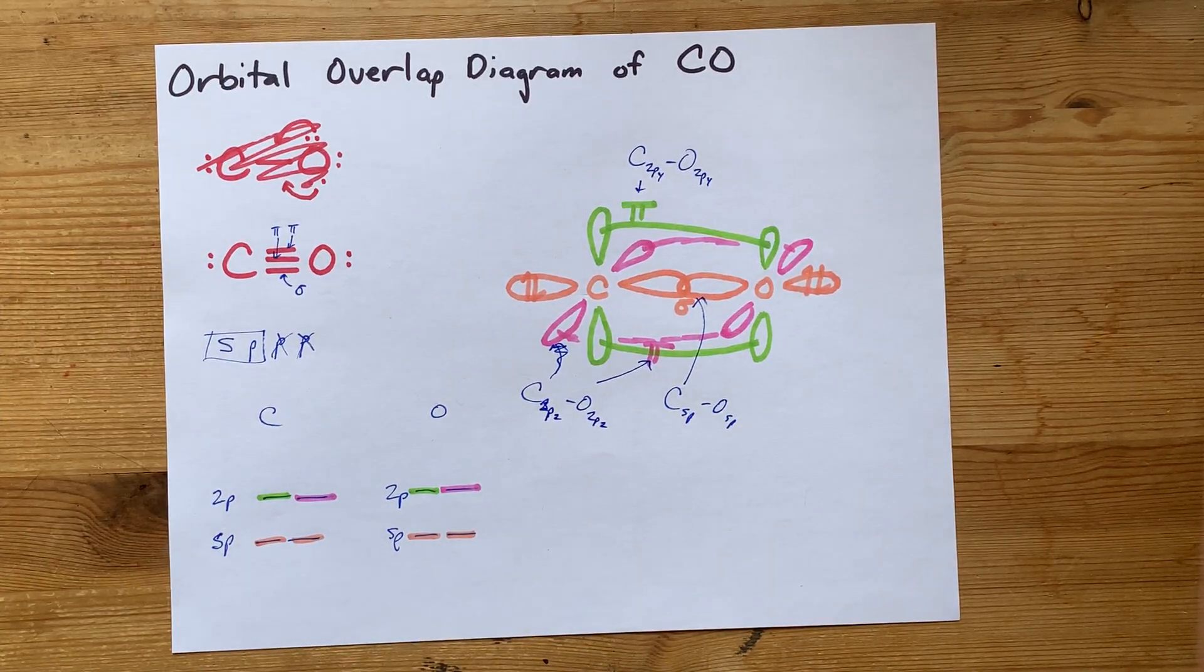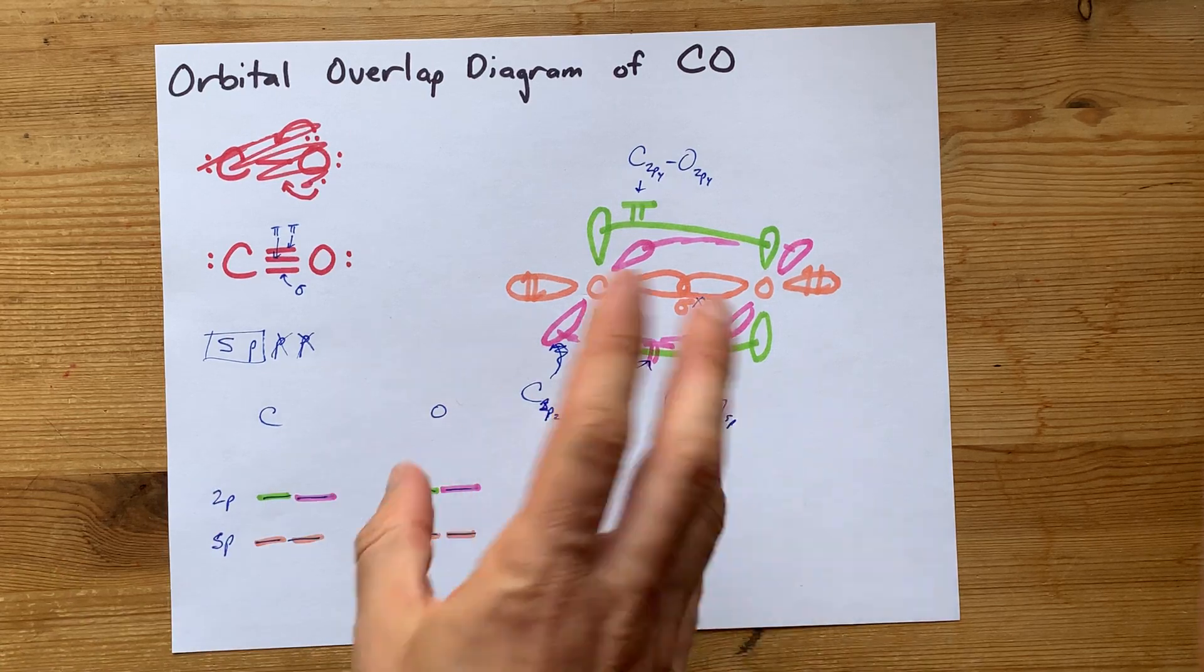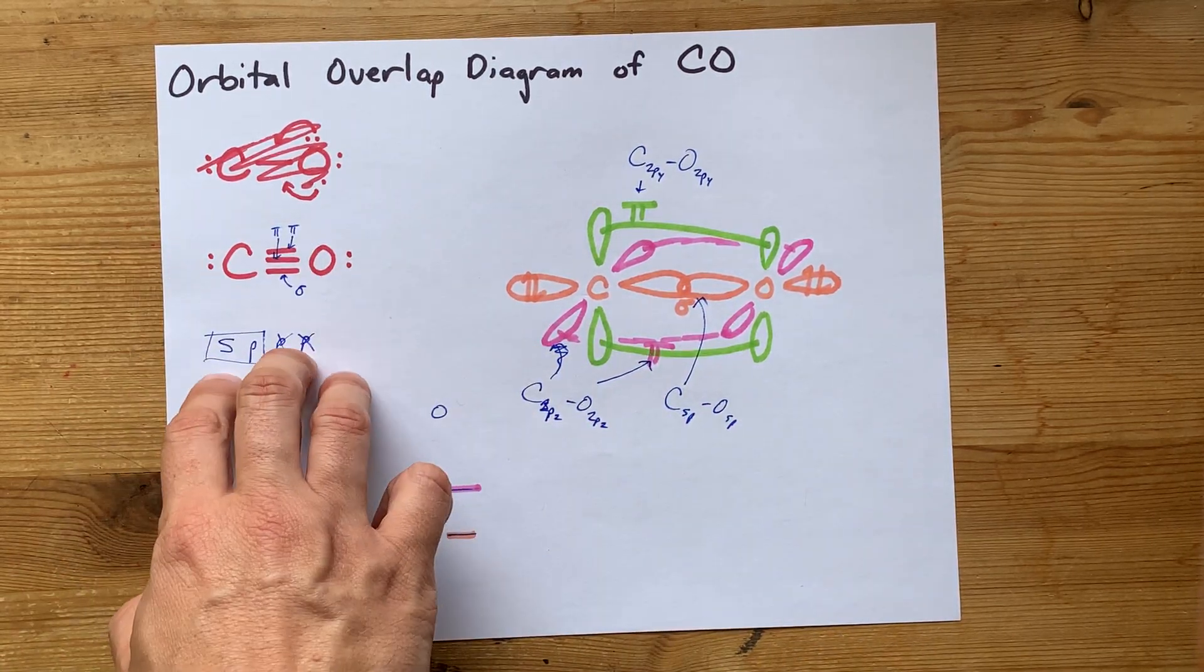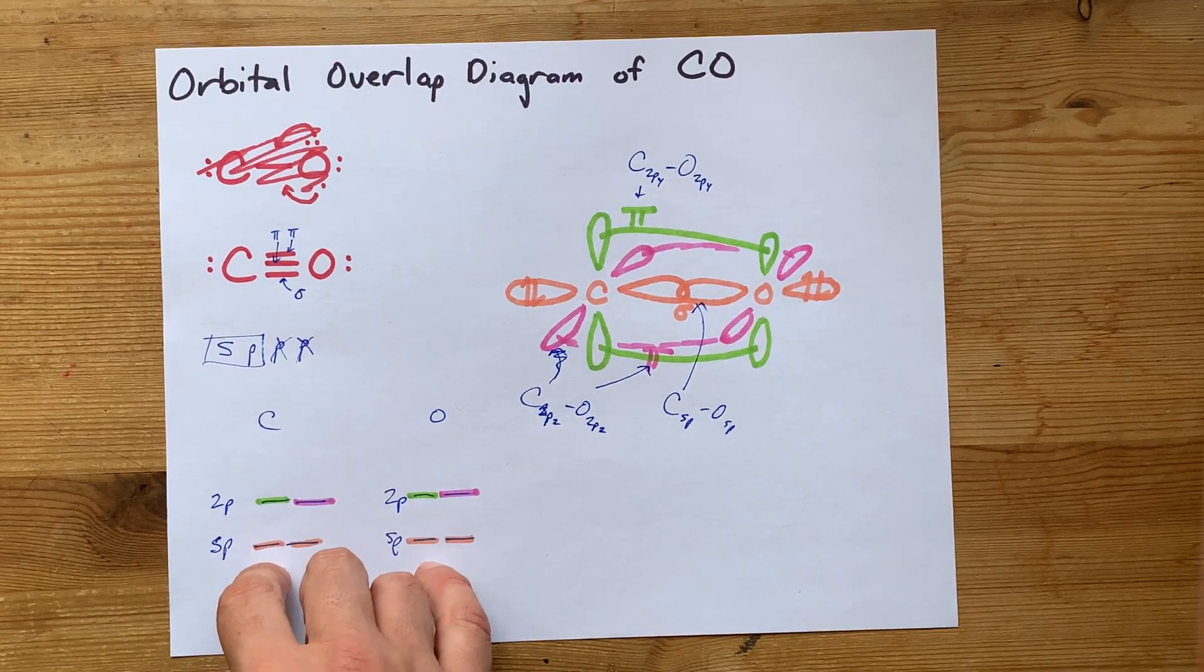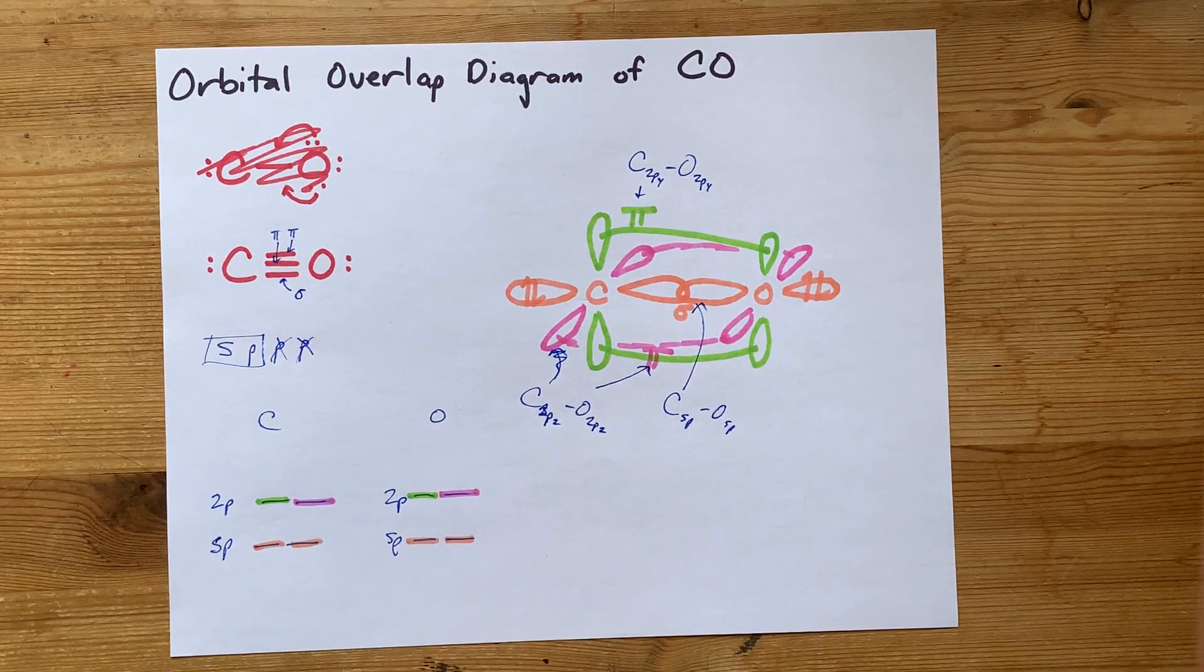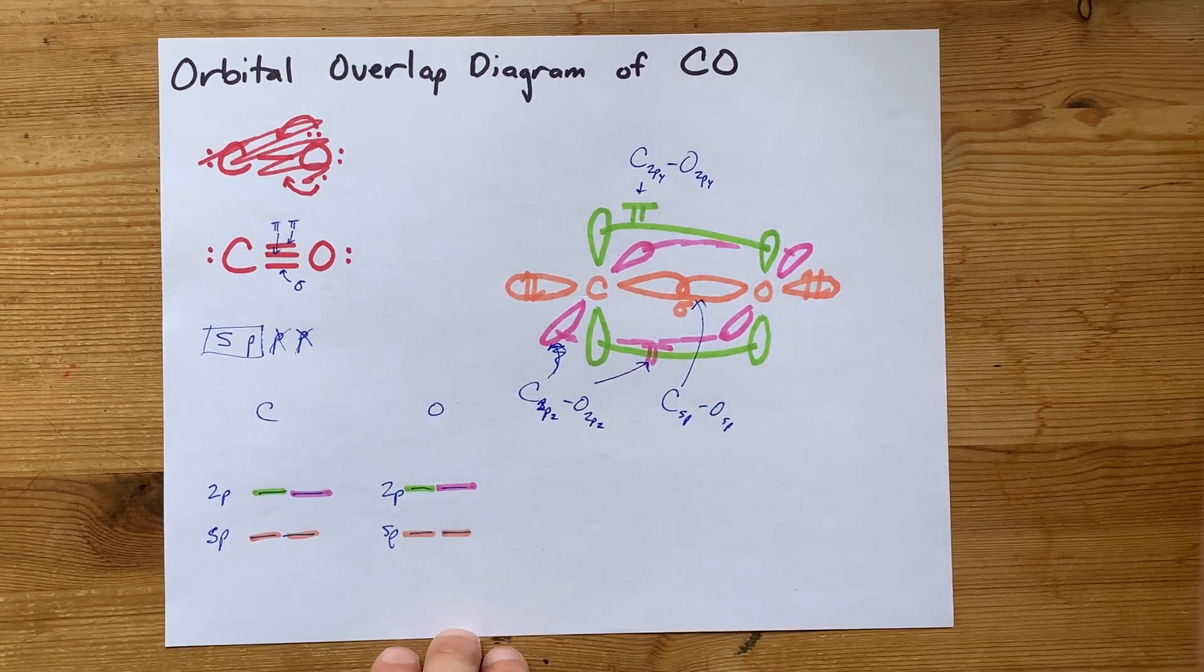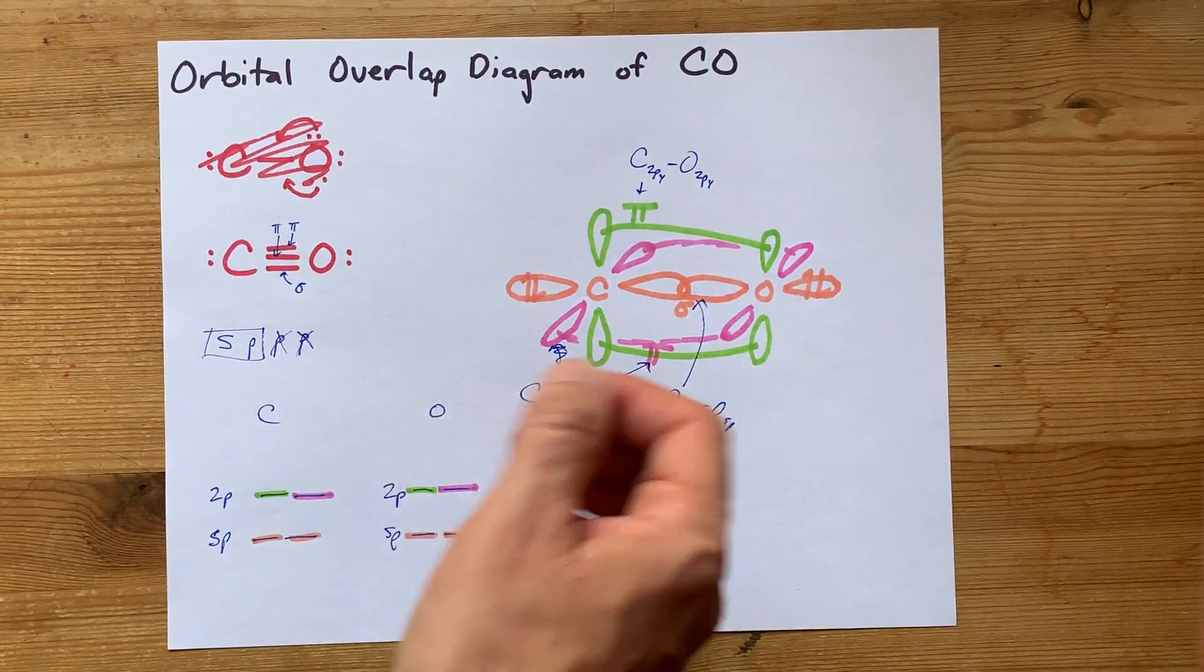Hope I didn't belabor that too much. Just making sure you understand how the Lewis structure gives you the pi bonds and hybridization, how the hybridization leads you to the shape of the molecule and the shape of the overlap of the orbitals. Thanks for being with me, and best of luck.